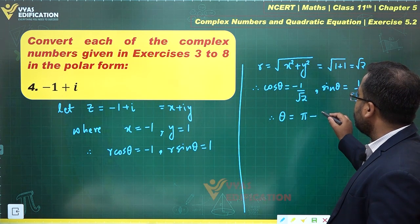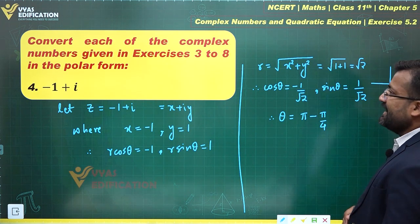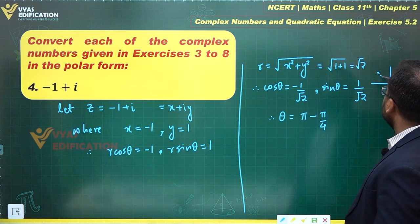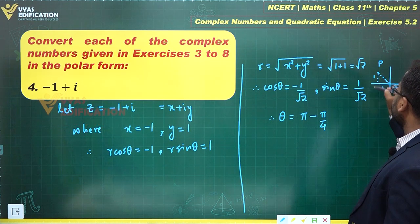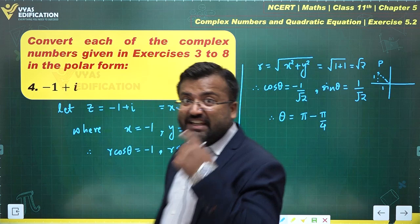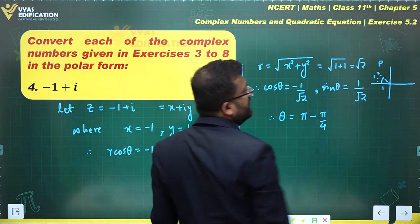Alpha, as you can clearly observe, would be pi by 4 over here by simply drawing the diagram. This is the location of the point P. This here is one unit, this here is also one unit. And yes, you can find the value of alpha very easily.